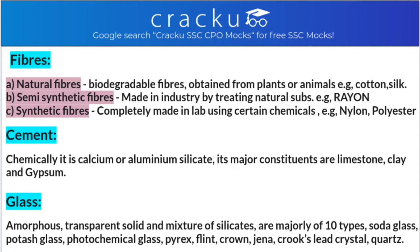After this, let's see fibers. Fibers are majorly of three kinds: natural fibers, semi-synthetic fibers, and synthetic fibers. Natural fibers are biodegradable and obtained directly from plants or animals — for example, cotton or silk. Semi-synthetic fibers are made in industry by treating natural substances, for example rayon. Synthetic fibers are completely made in the laboratory using certain chemicals, for example nylon and polyester.